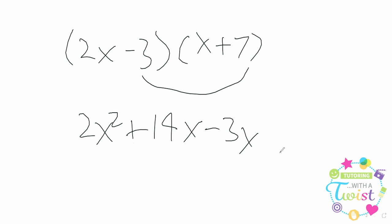And last, this negative 3 and the 7, we'll combine. Make negative 21. And just like before, we'll combine like terms, this 14 and that negative 3. They're going to come together, and we're going to end up with 11x.